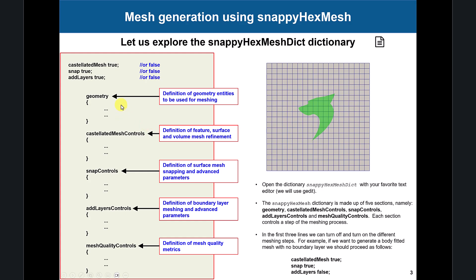When you read your SnappyHexMesh file, you have these option blocks. At the beginning you'll have keywords where you can turn each option off or on. So if you want to do snapping and boundary layer, put castellation to false. My advice: always keep castellation and snap set to true, and if you want you can put addLayers to false, meaning you don't want to add the boundary layer, because that can be done as an independent step.